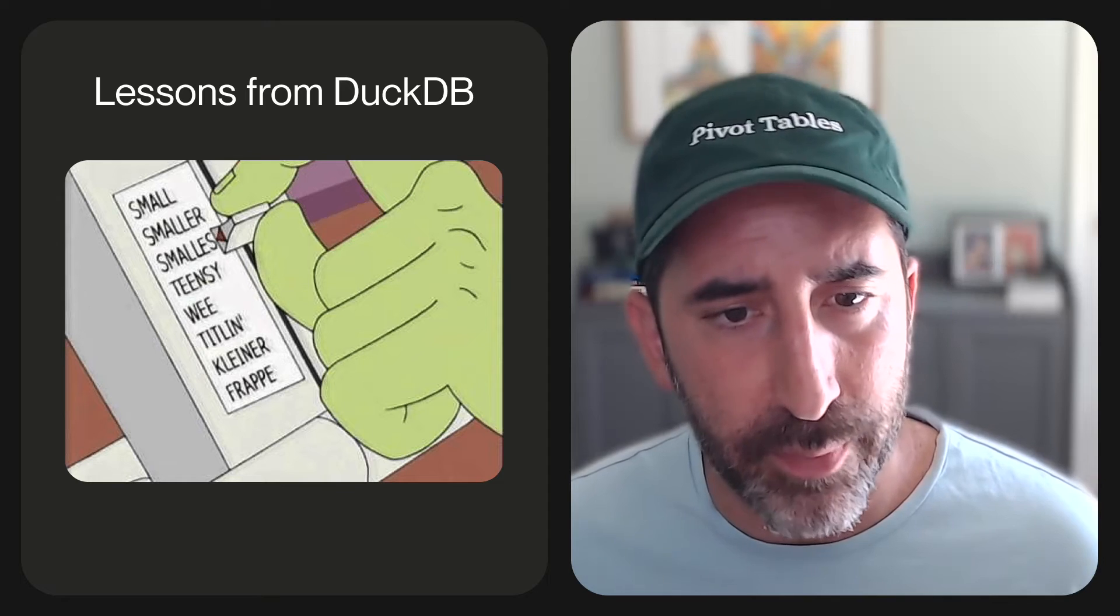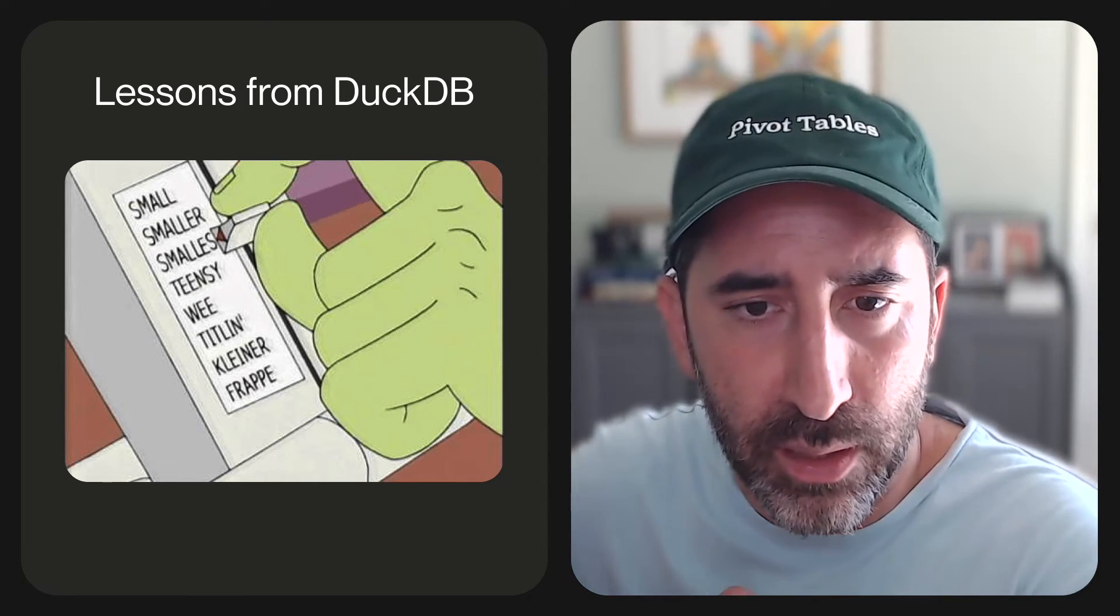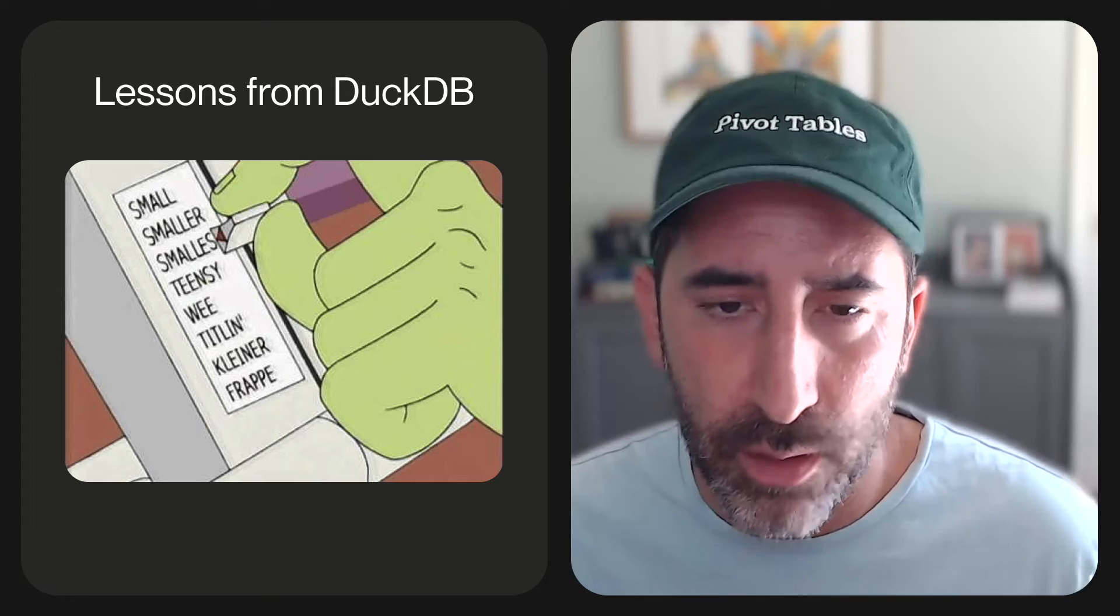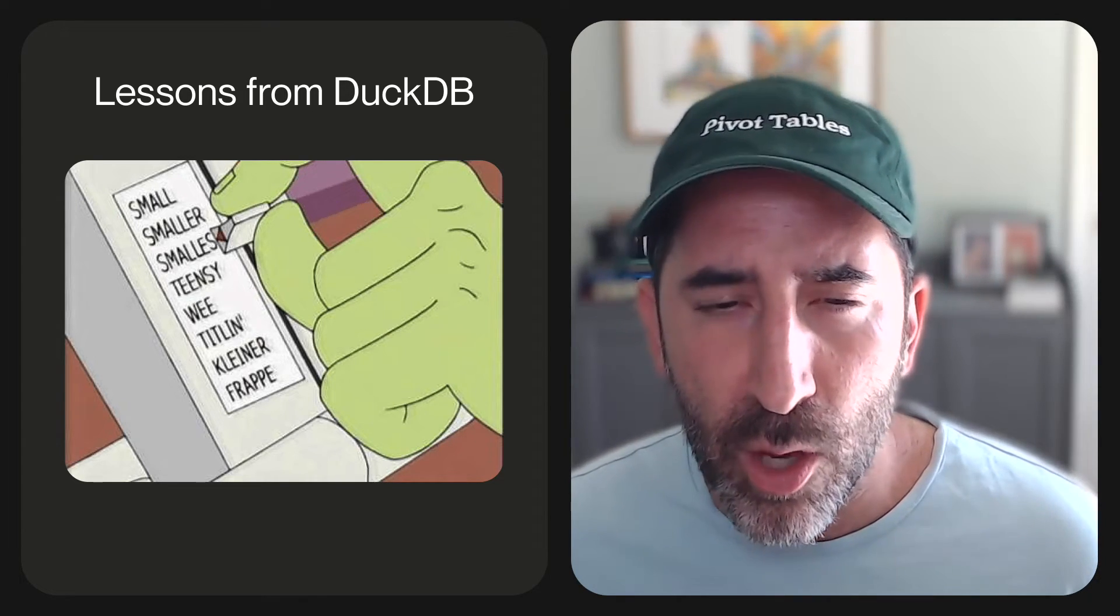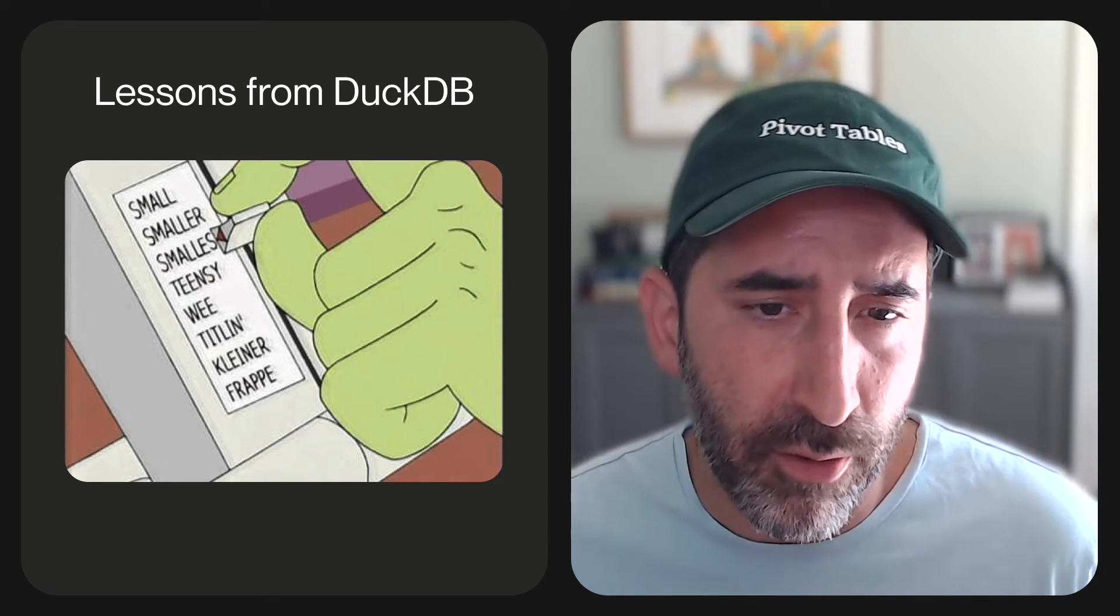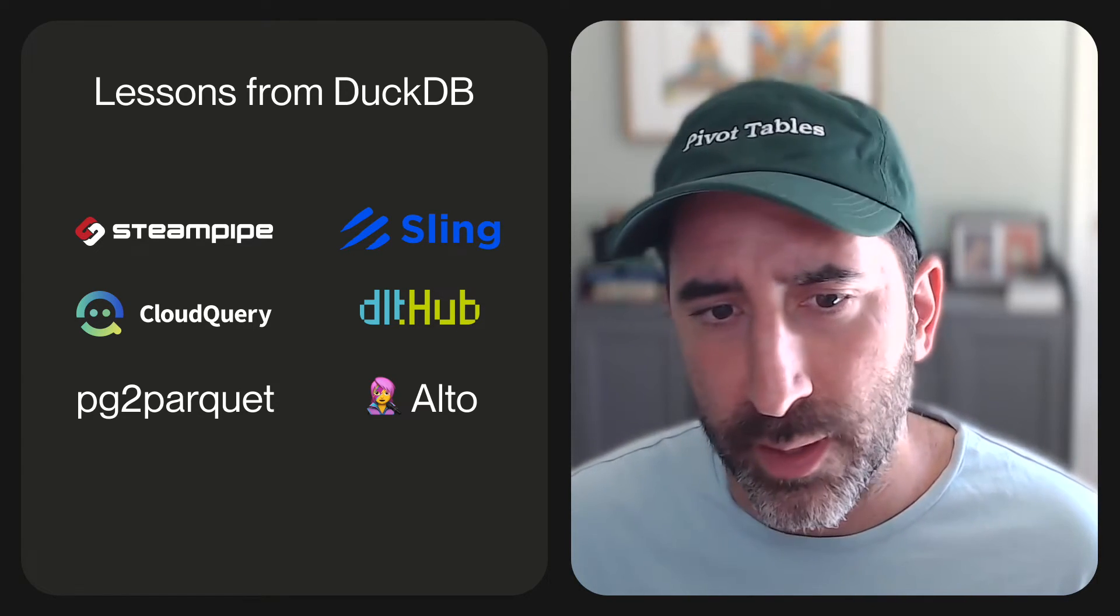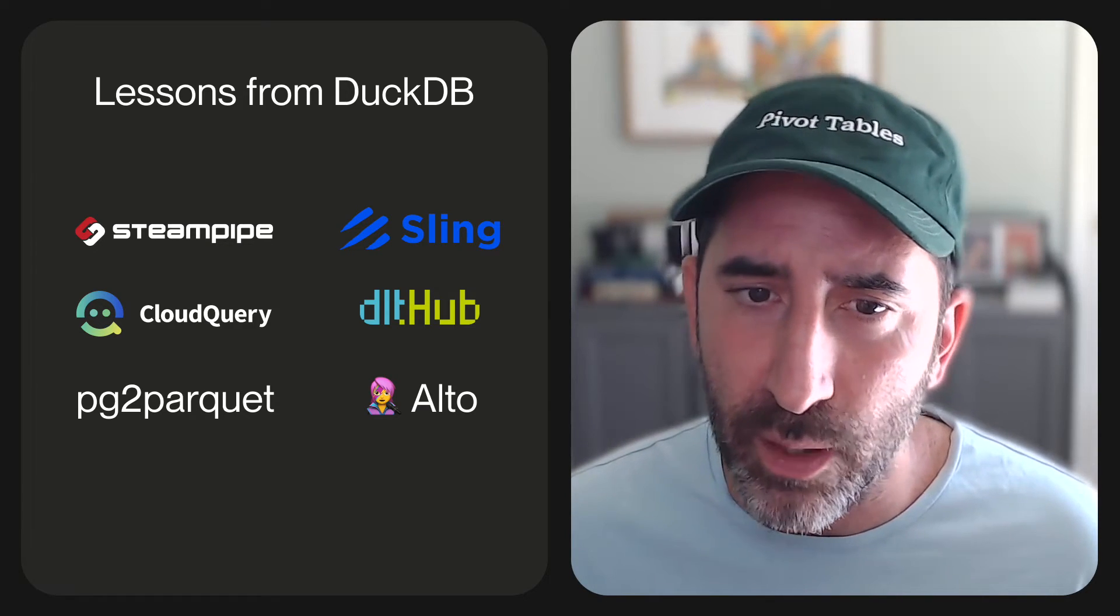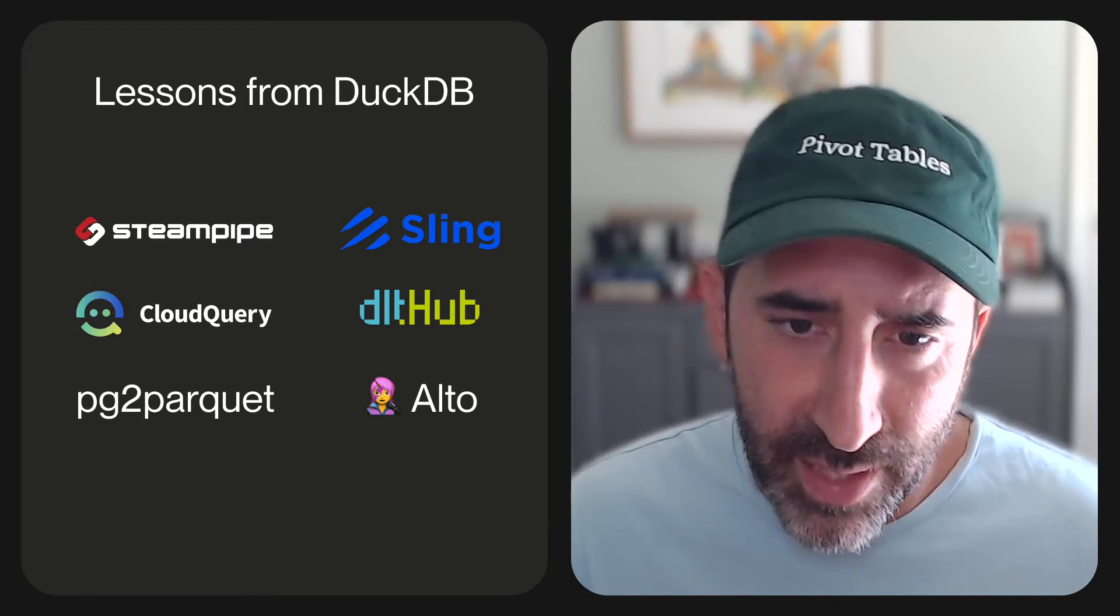I think what we can do is take a lesson from DuckDB. DuckDB did this wonderful thing where they said we love analyzing data, but maybe we don't always want to take a giant warehouse. Maybe if we could take a small embedded library, we can do some of these common routine tasks like ingest a lot of CSVs and do analysis without having to resort to Databricks or Snowflake or Spark. We've seen quite a bit of other ELT libraries that have that same philosophy. There's tools like Sling, DLT, Steam Pipe, PG2 Parquet, Cloud Query, and Alto. All of these tools do a really great job of being small, lightweight tools that solve the use case particularly well. But then when we have those, we come back to the same problem - how do we orchestrate them?